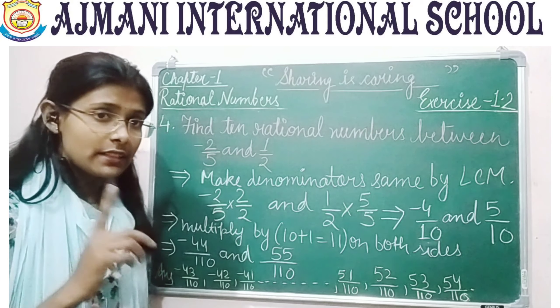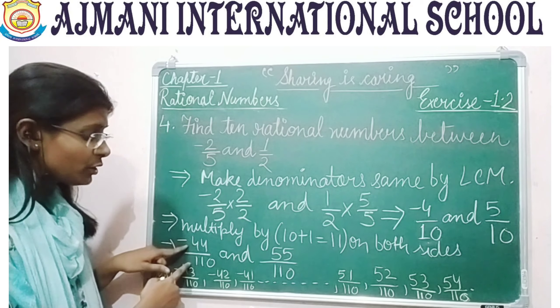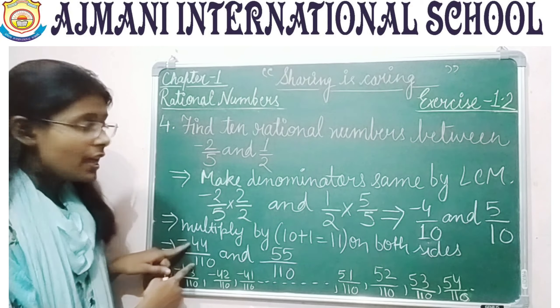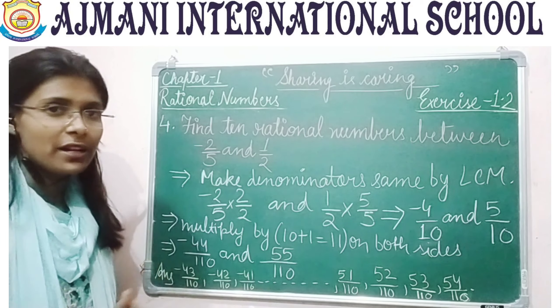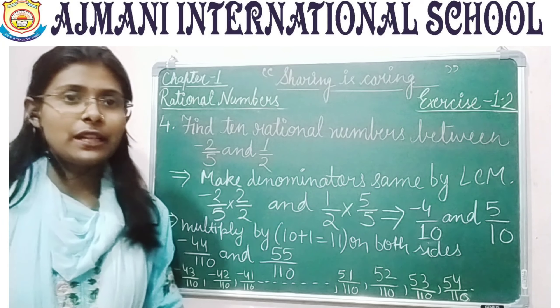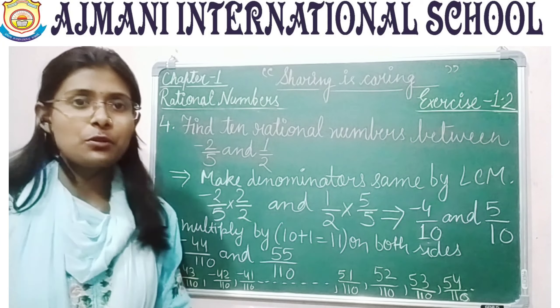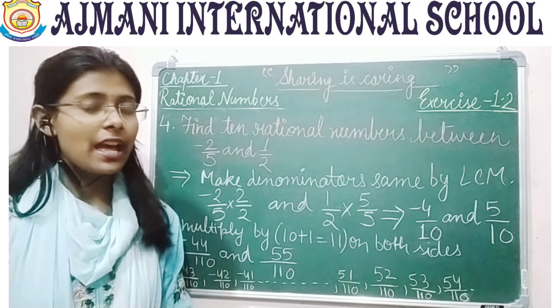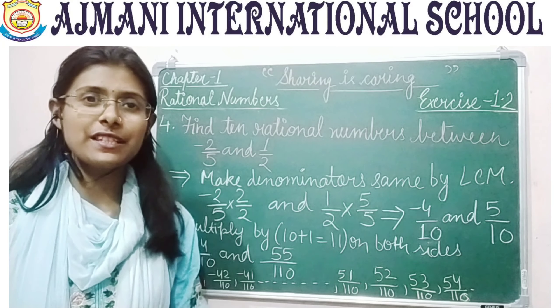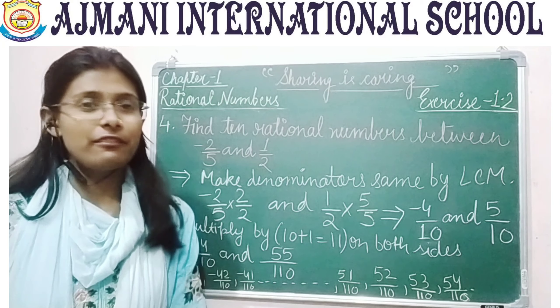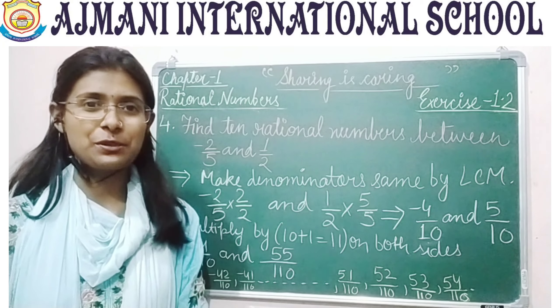Note that we do not include minus 44 by 110 and 55 by 110 themselves because we need the rational numbers between them, not the endpoints. Based on question 4, you need to do question number 5 and 7 by your own, and question number 3 will help you with question number 5. If there is any query, feel free to ask. We are always there to help you. Thank you.